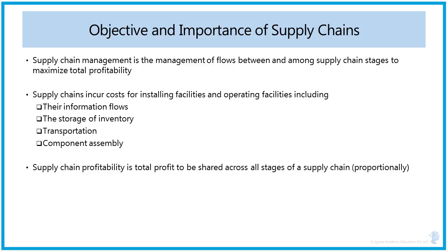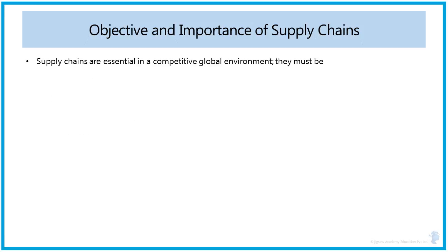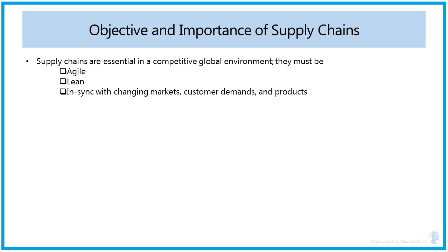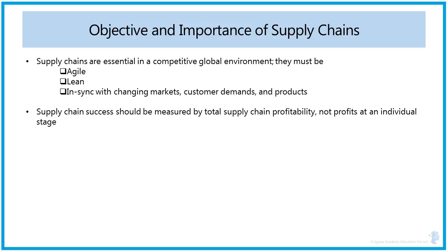Profitability should be shared in proportion to the contribution from each stage. What we have learned here is why the supply chain is necessary for an organization — it is the need of today's global competitive environment, where supply chains must become more agile and lean, in sync with changing customer demand. Once we know the requisite of a supply chain, we can identify how to improve upon the baseline to create a more sustainable and profitable enterprise.